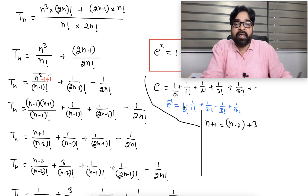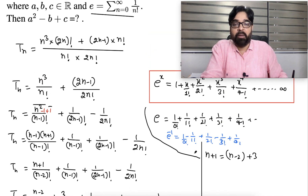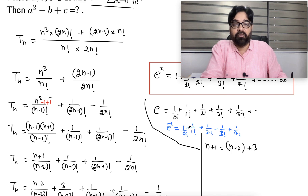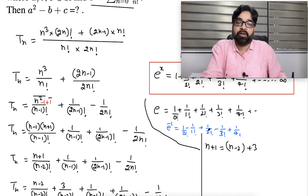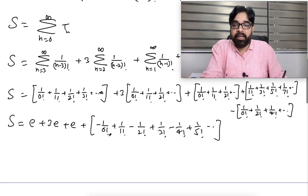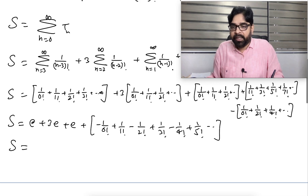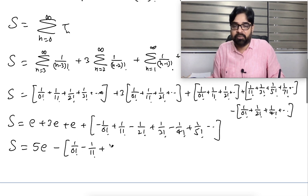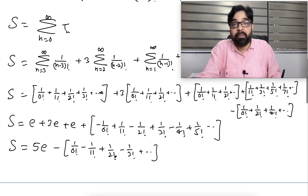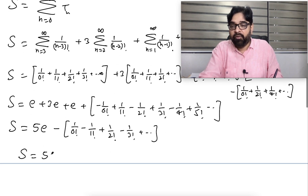Taking minus common from the combined alternating series, we get −(1/0! − 1/1! + 1/2! − 1/3! + ...) which is exactly −e^(−1). So S = 5e − e^(−1) = 5e − 1/e. Therefore s = 5e − 1/e is the answer.